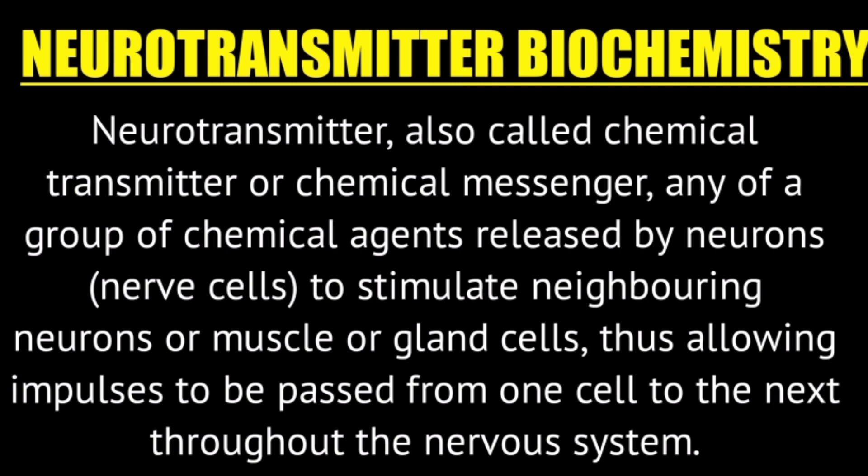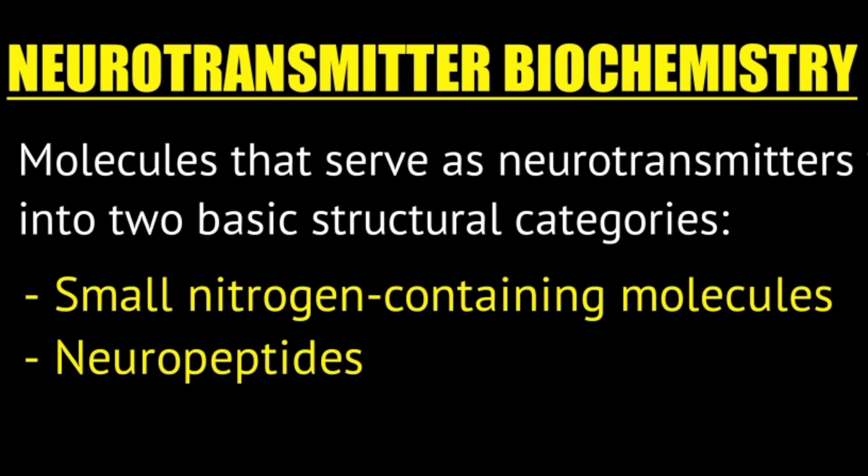Neurotransmitters, also called chemical messengers, are chemical agents released by neurons to stimulate neighboring neurons, muscles, or gland cells. This permits impulses to pass from one cell to the other — this is the mechanism of communication in the nervous system.